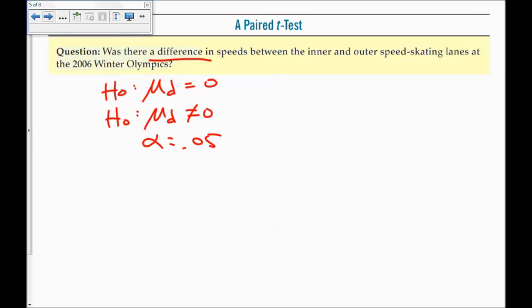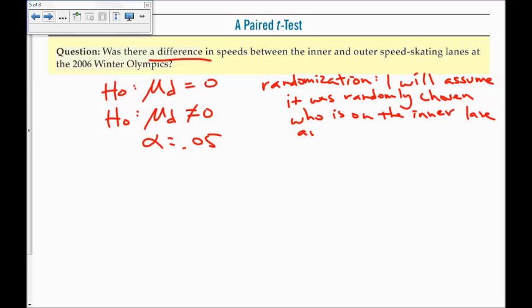Checking my conditions, I'm assuming that it was randomly chosen which person was inner and which one was outer. I don't know if that said that in the book. Because if they always had the faster skater start on the inner or the outer, then that would also have some bias in our data.